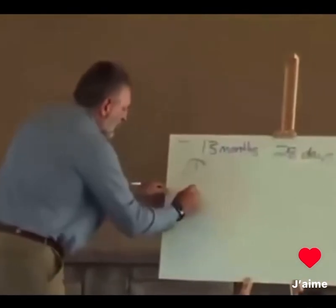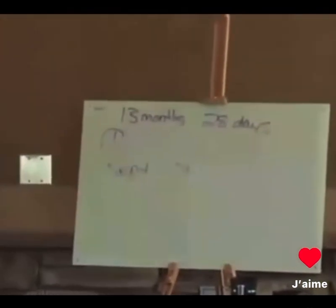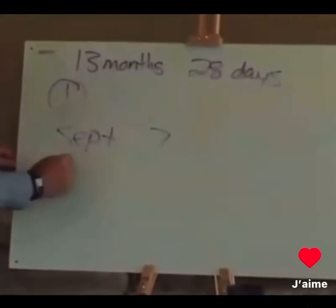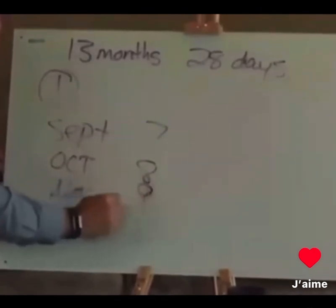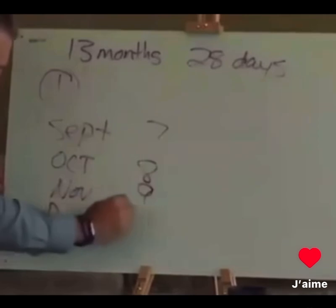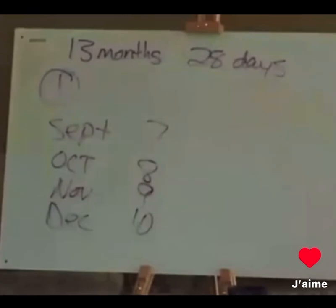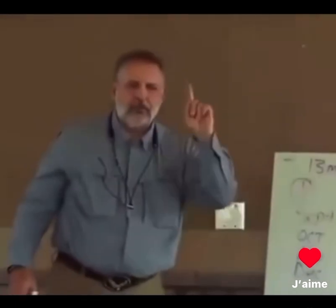What does Sept mean? Seven. I thought that was the ninth month. What does Oct mean? What does Nov mean? What does Dec mean? It's supposed to be the 7th, 8th, 9th, and 10th month. Jan is 11, Feb is 12, March is 13, April is our first month.